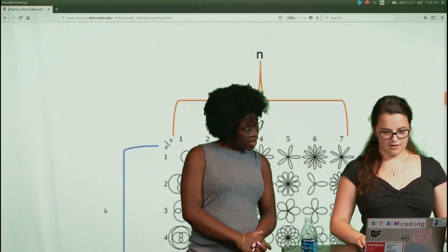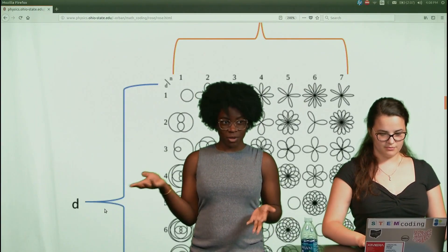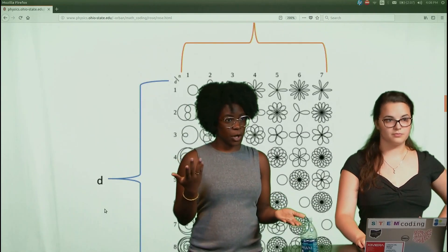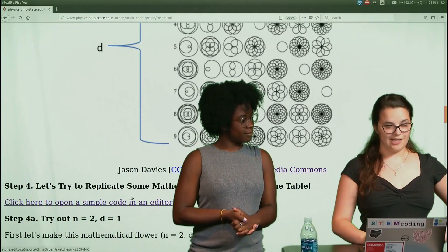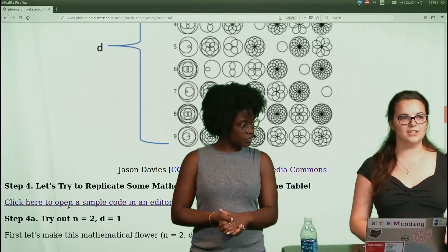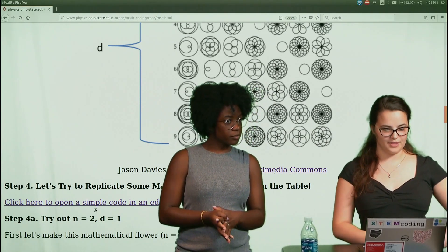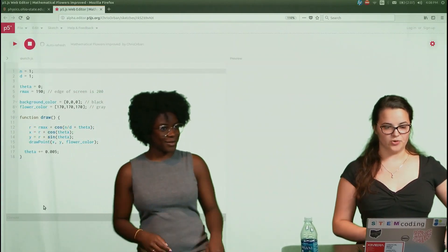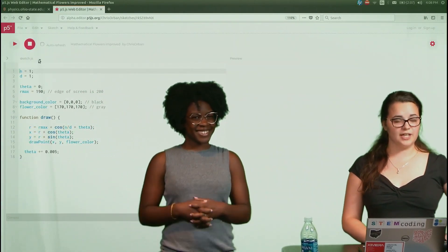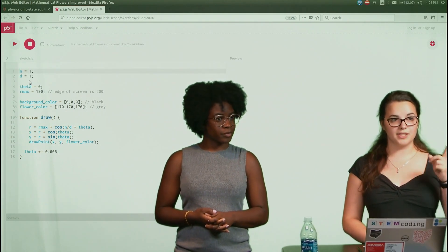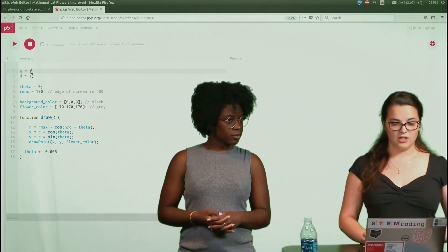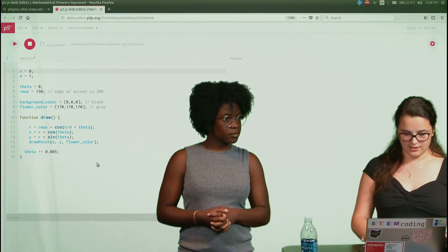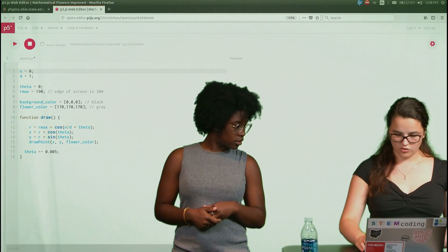So now we get to check to make sure that our code is running smoothly. And the first thing we're going to do is set n to 0 to see what shape we get. Okay. So if you click on the link below, or there's also going to be one in the description, it opens a code editor. So originally, it's set to n equals 1 and d equals 1, but we're going to change it to n equals 0 to look at the simplest form.